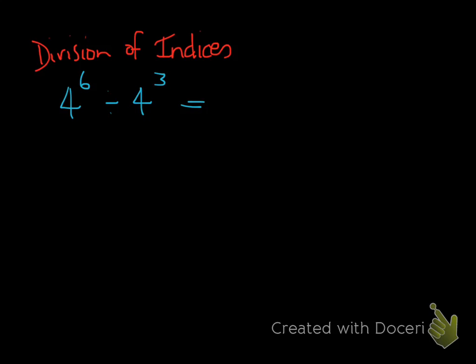This is just a very basic division between two indices. There's another way of writing this — we can write 4 to the power of 6 over 4 to the power of 3, as a fraction. This is the method I want to stick to in this tutorial when talking about division, and the reason will become clear in a second. First, I want to show you the expansion method.